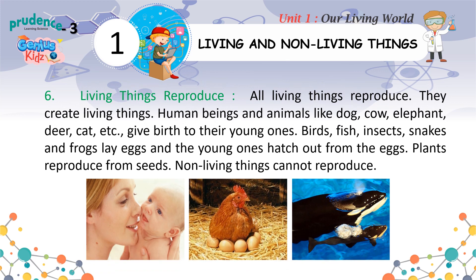Six: living things reproduce. All living things reproduce — they create new living things. Human beings and animals like dog, cow, elephant, deer, cat, etc. give birth to their young ones. Birds, fish, insects, snakes and frogs lay eggs, and young ones hatch out from the eggs. Plants reproduce from seeds. Non-living things cannot reproduce.